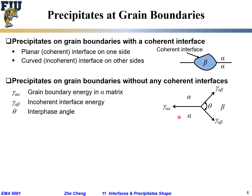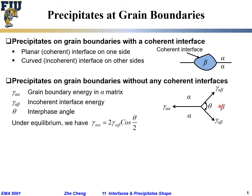Under equilibrium conditions, for this triple point to be stable, γ_αα is trying to move that point — essentially trying to reduce the total interfacial energy between alpha and alpha. Meanwhile, γ_αβ is pulling along the bottom on both sides. The force balance gives us: γ_αα = 2γ_αβ · cos(θ/2), where θ is the so-called interface angle. The factor of two comes from both sides, and cos(θ/2) is the projection — the total angle is θ so you use only half of it for each side.